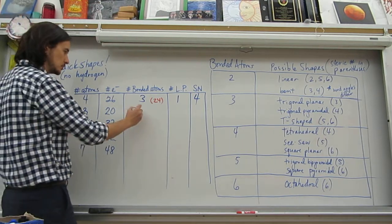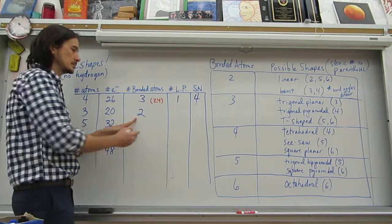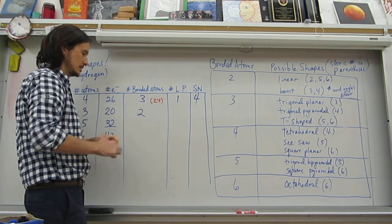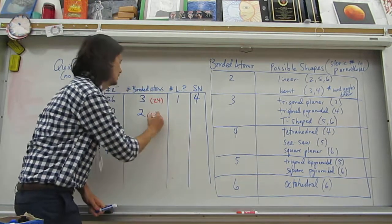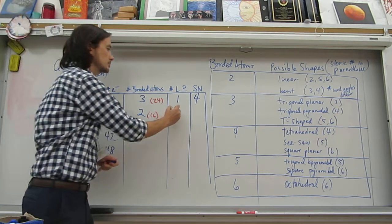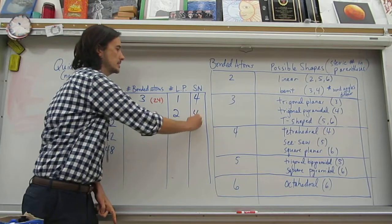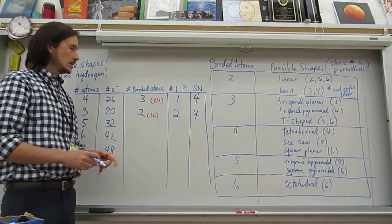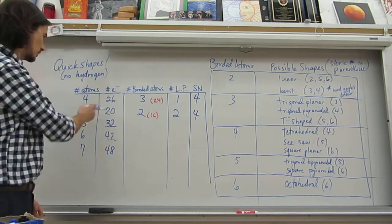All right, we've got three atoms. That means we're going to have two atoms bonded to a central atom. 2 times 8 is 16. 20 minus 16 is 4, which is two lone pairs. So two bonded atoms, two lone pairs. That's a steric number of 4. And we're looking at bent. This should be maybe 20. That's not water.